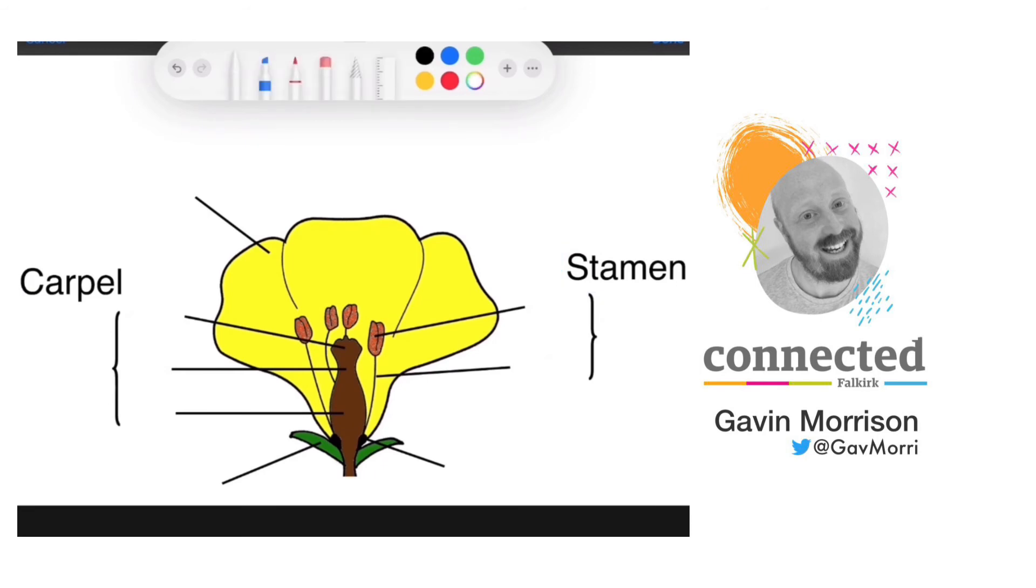Now that I have the text boxes in place, I am going to use the pen to handwrite and label up the rest of the diagram.